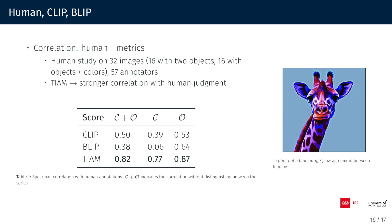In a human study involving 32 images, we task individuals with rating whether the generated image reflected the prompt. TIAM exhibits a stronger correlation compared to BLIP and CLIP scores.